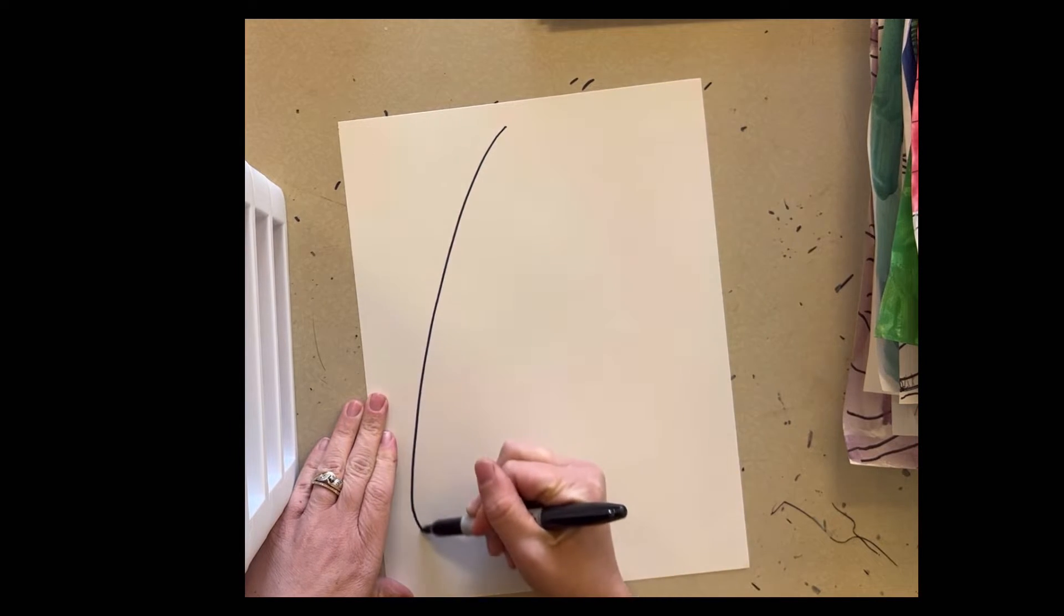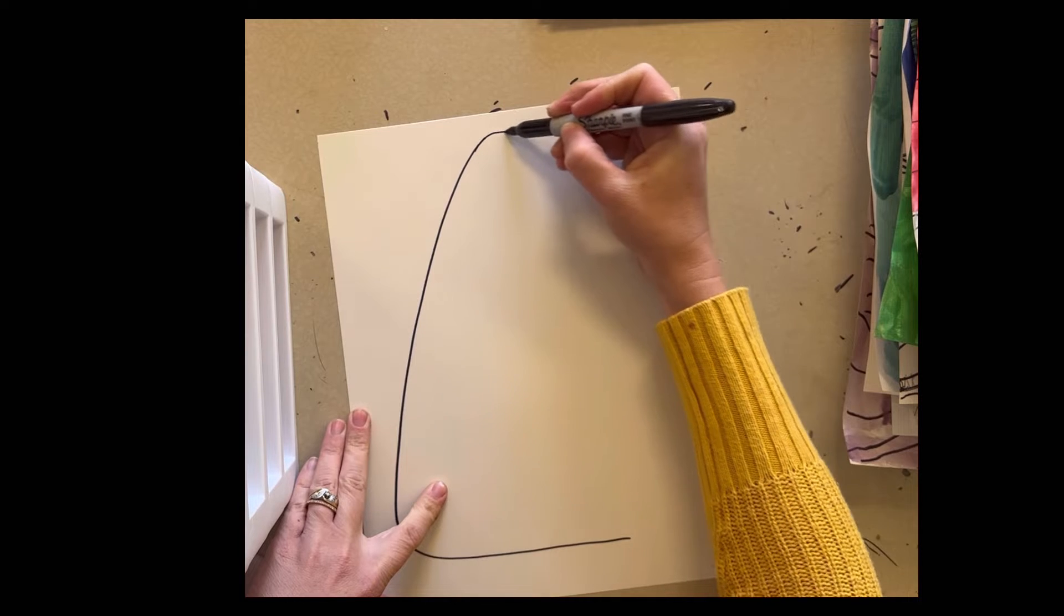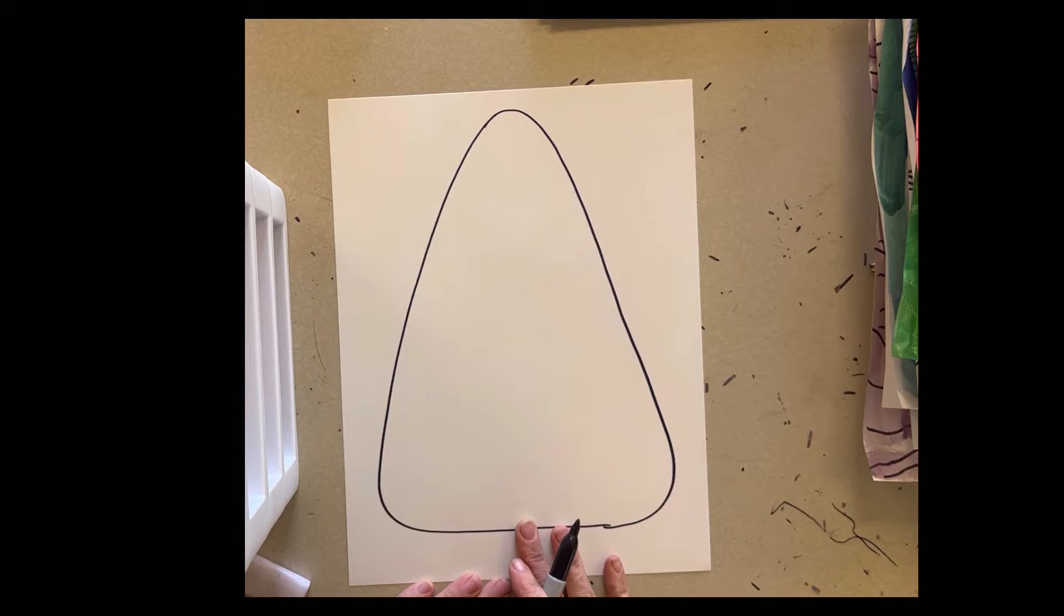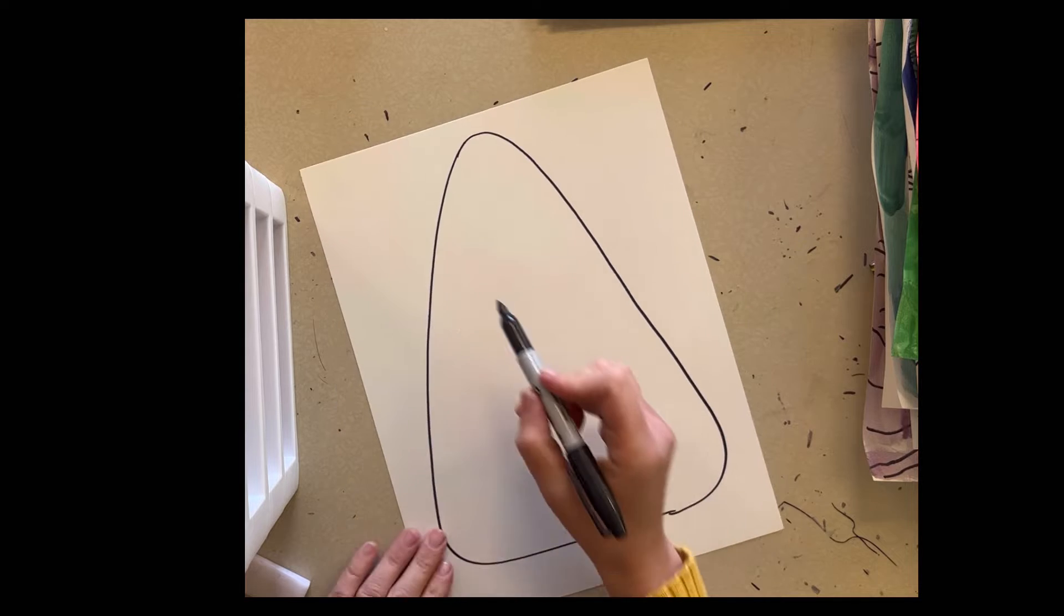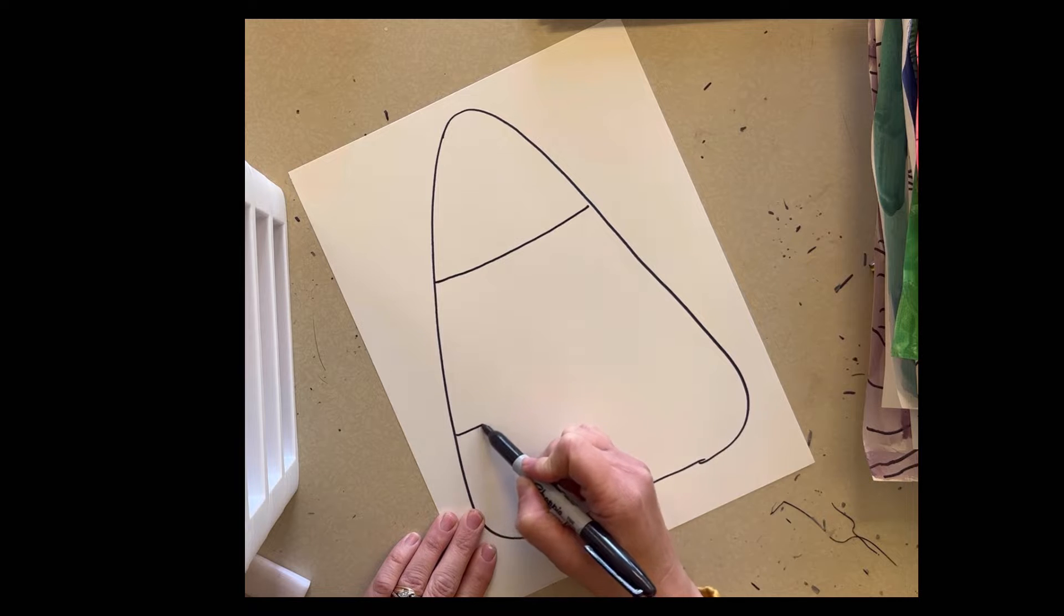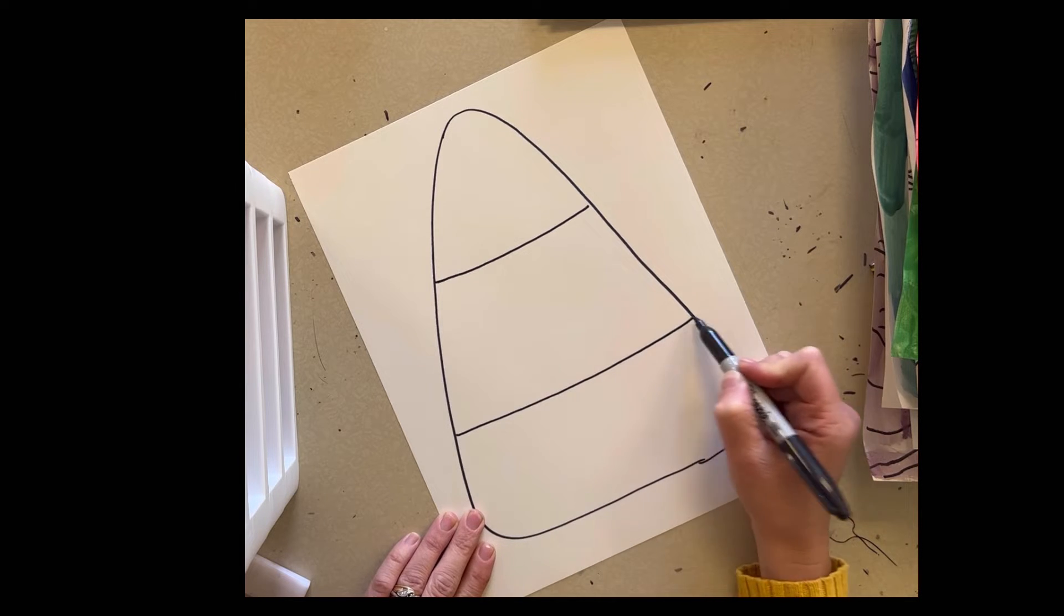So to start out you are going to receive a rounded out triangle like this. I'm going to provide this for you. You are then going to get your Sharpie and you're going to divide your candy corn into the three candy corn shapes.